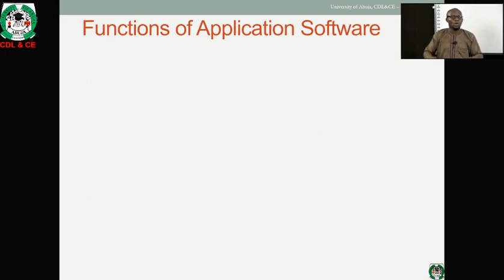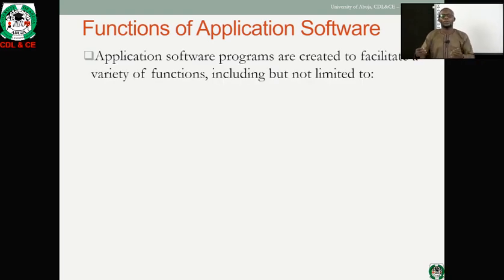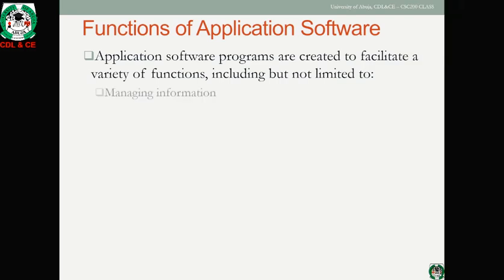In summary, application software is a program or package that enables computer users to perform specific tasks. The functions of application software include managing information — for example, accessing a university portal to print your transcript from year one to the current year, giving you the opportunity to retrieve all your information regarding the course you are studying.